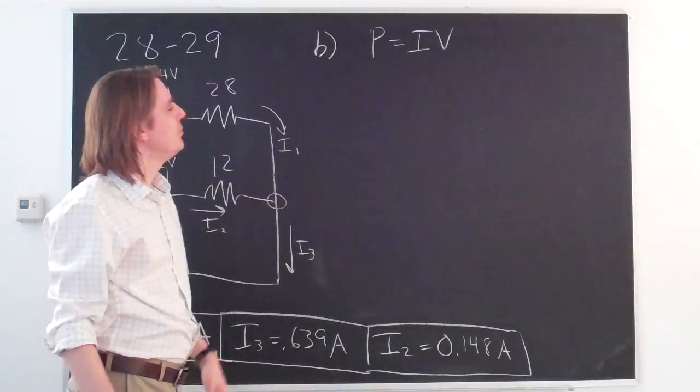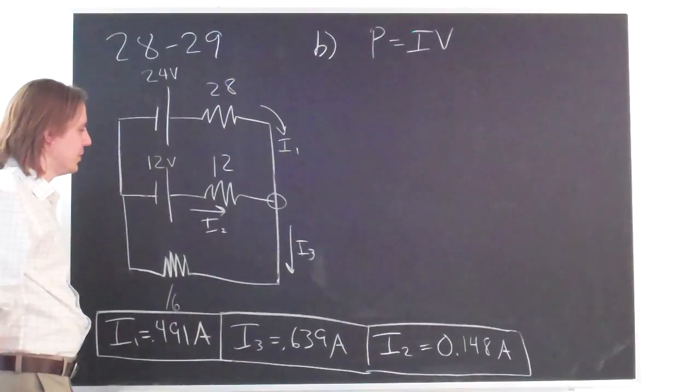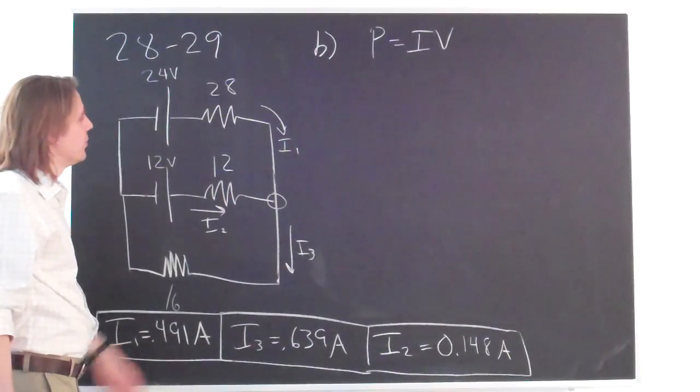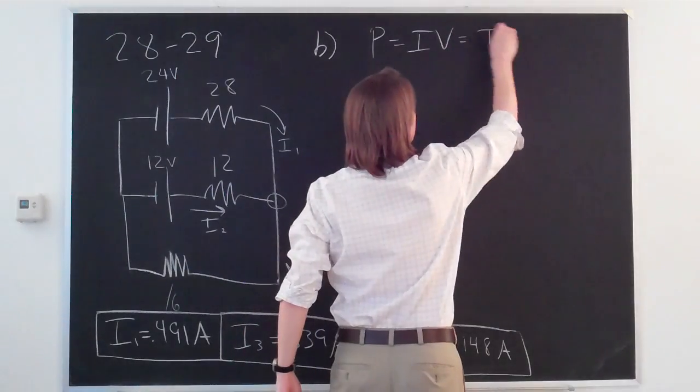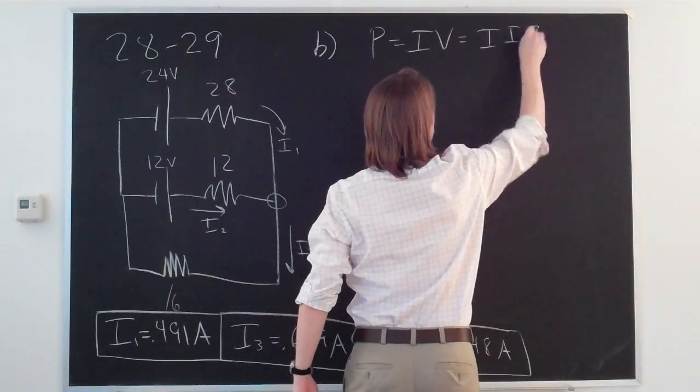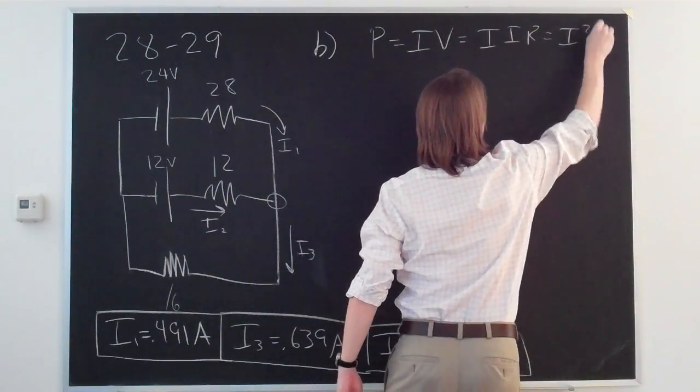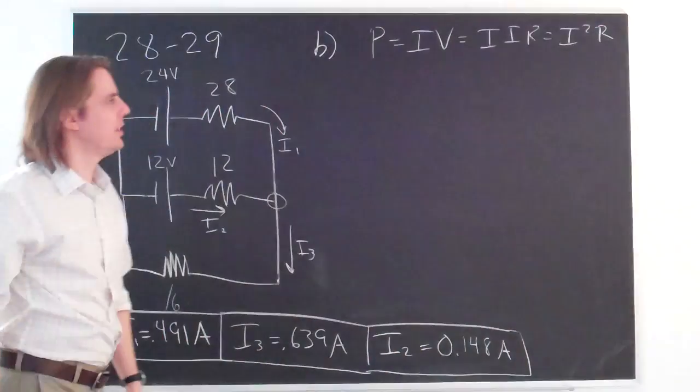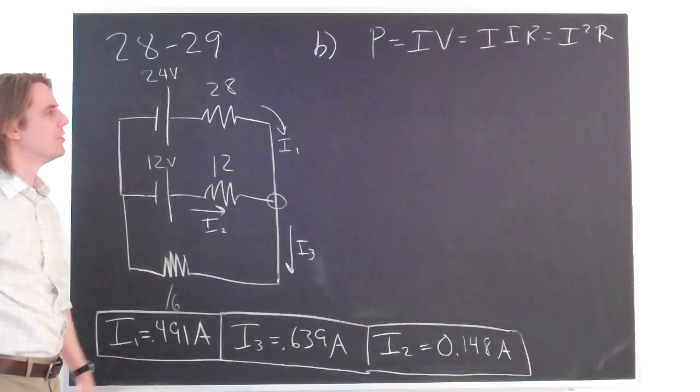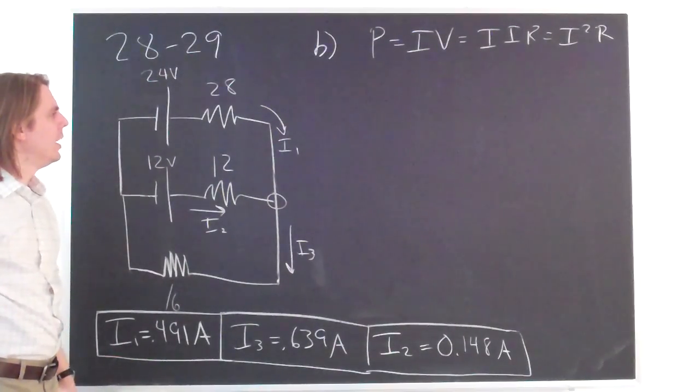So P equals IV, but sometimes it's more convenient to express it in terms of the things you've already calculated. So we already have the current, we have the resistance. So if P equals IV, that's also I times IR. So that's also I squared R. So you don't have to actually know the potential drop to get the power. If you just know the current and the resistance, that's good enough. Alright, so the power dissipated in the 28 ohm resistor.